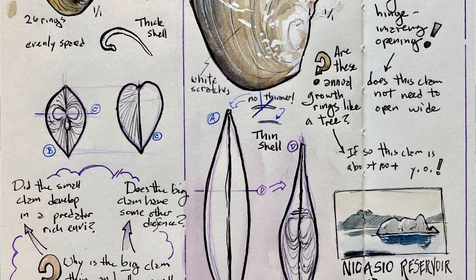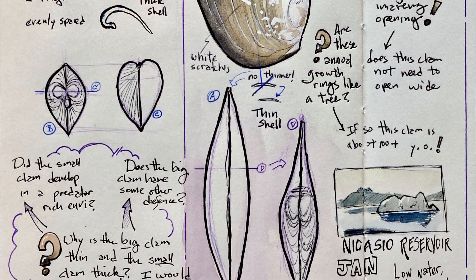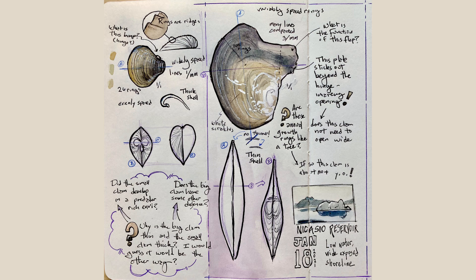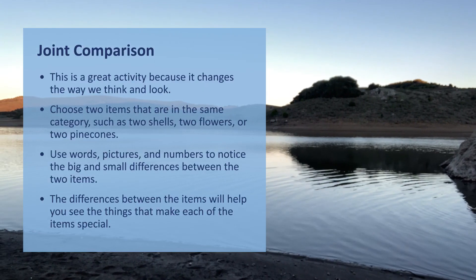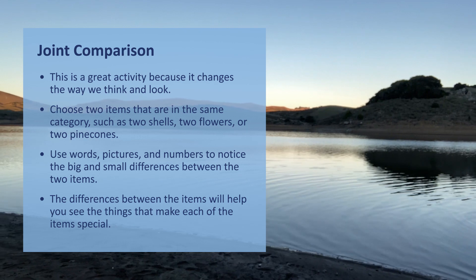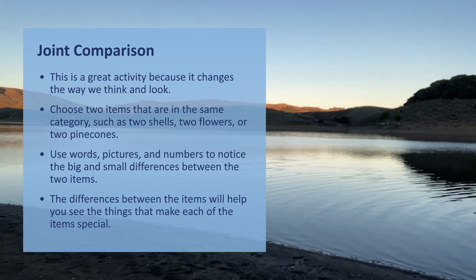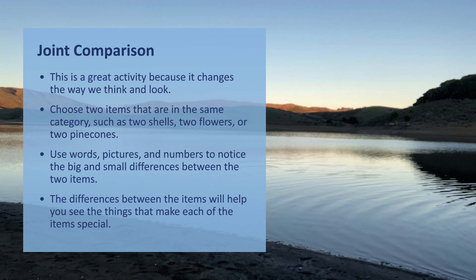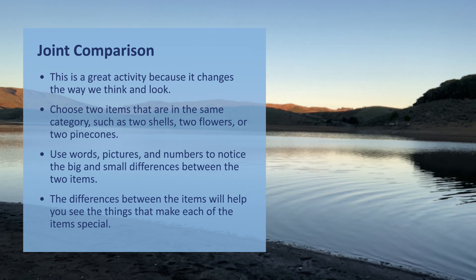The spacing of these things being different came about specifically because I did a joint comparison. And that brings us to your nature journaling challenge for this week. Find two things in the same category — two different kinds of things, perhaps two different species in the same group — and compare them to see what you notice.